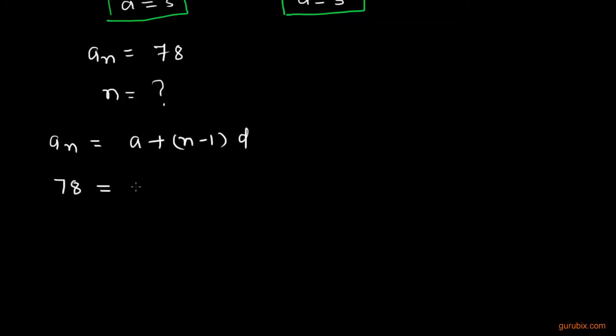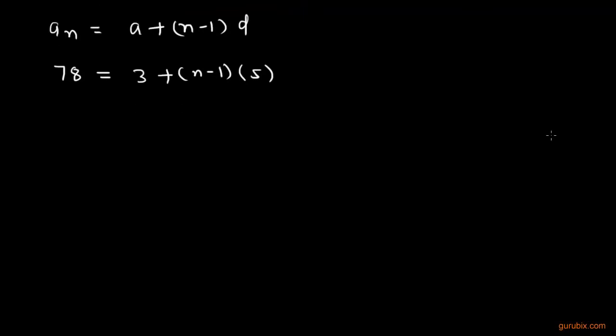A is 3, N minus 1 into D, and D is 5. Now, we shall find the value of N in this equation. We get 3 + 5N - 5 = 78.